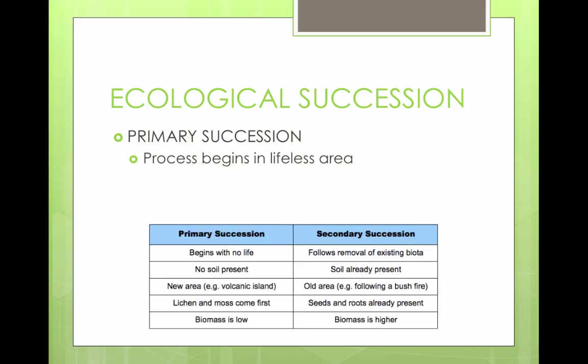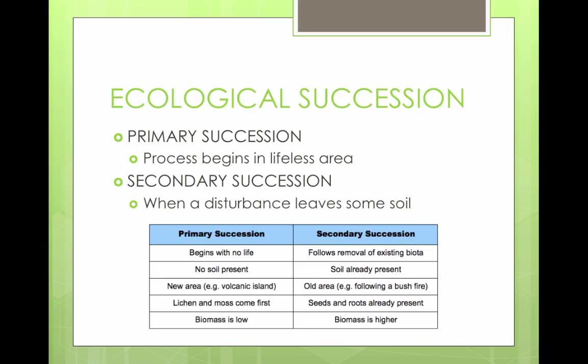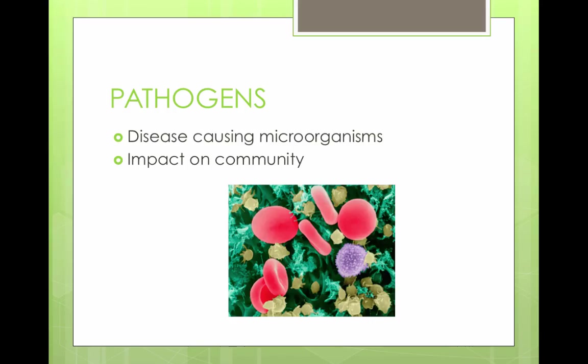In primary succession, you may have prokaryotes move in, then moss, then lichen, and then eventually larger plants and animals. Secondary succession occurs when a disturbance leaves some soil behind, for example in the case of a fire. Pathogens are disease-causing microorganisms or agents that can also have a big impact on a community. A disease doesn't just affect one organism — it affects the organisms that eat it or are eaten by it.